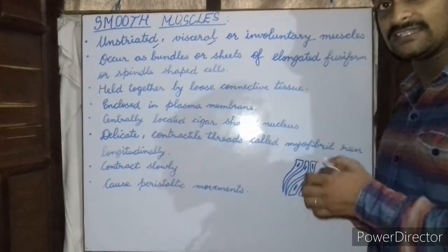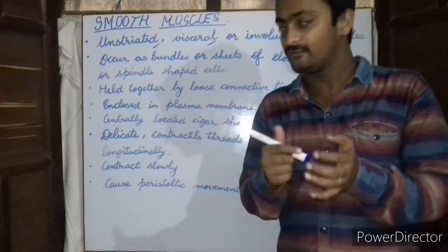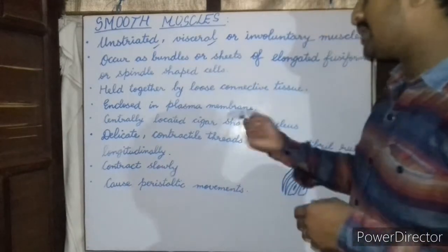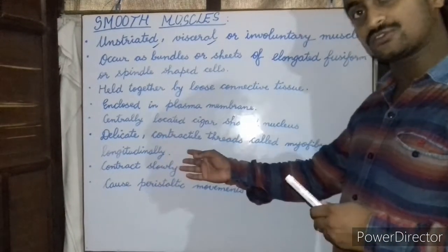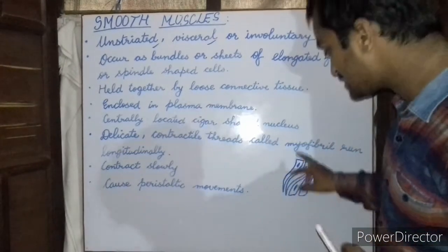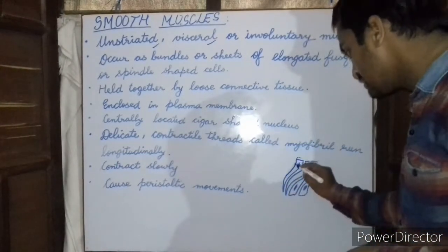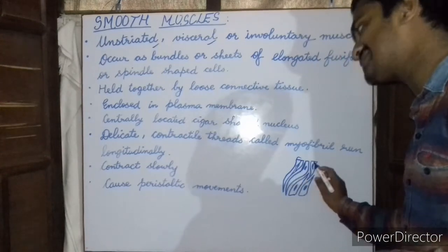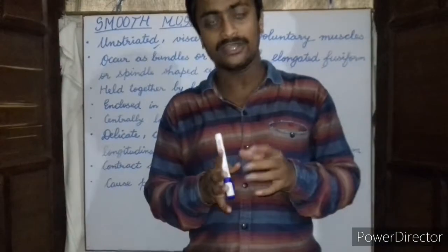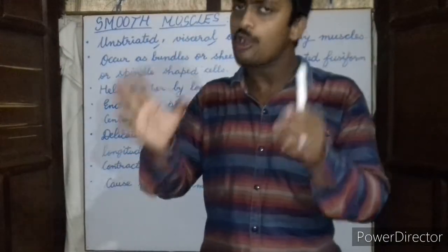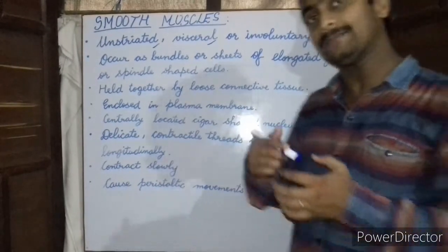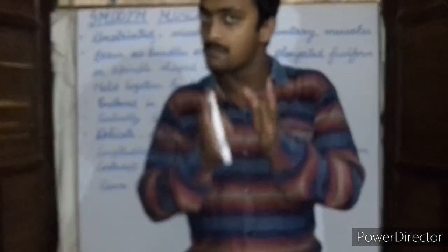The smooth muscles are uninucleated, meaning they consist of only a single nucleus. They are delicate and consist of contractile threads called myofibrils, and these myofibril fibers run longitudinally throughout the cells. These smooth muscles contract very slowly; however, they can carry out contractions over a long period of time, which is why they are responsible for the peristaltic movements in the body.